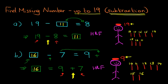So that is how we find the missing number for numbers up to 19 for subtraction questions.